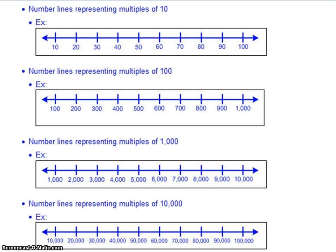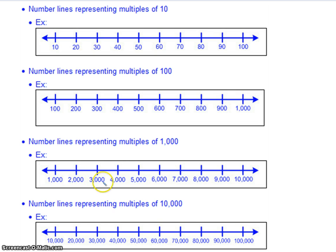This first slide shows some examples of number lines. Each number line uses a different place value size. The first counts by 10s — multiples of 10 from 10 to 100. The second uses 100s, counting by multiples of 100 up to 1,000. The third uses 1,000s, counting up to 10,000. And the final example uses 10,000s, counting by 10,000s up to 100,000.